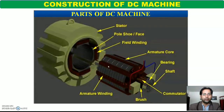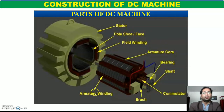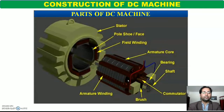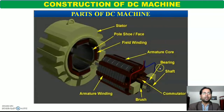दूसरा important part DC machine का जो rotor का होता है — rotor को हम DC machine के case में armature भी बोलते हैं. इसके भी दो important parts होंगे: पहला armature का core होगा, दूसरा armature की winding होगी. जैसा कि transformer के case में बताया है, core हमेशा lower reluctance path provide करता है magnetic flux को. इसलिए core की जरूरत हर electrical machine में है जहां electrical energy, magnetic, और mechanical energy कहीं न कहीं transform हो रही है. Other important parts DC machine के हैं like commutator, brushes, and shaft, and accessories like bearings, balls, और cooling fans.